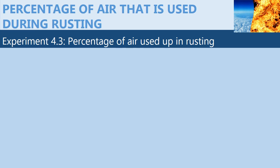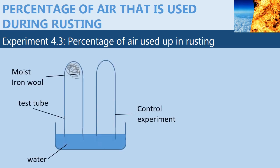A simple setup as shown in this diagram will help us to understand what percentage of air is used. You need a trough, two test tubes, iron wool, and water. The iron wool that is used must be moist so that it can stick at the end of the test tube.